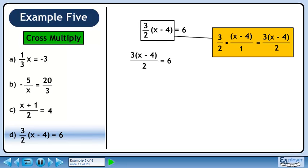We can write our next step as 3 times x minus 4 over 2 equals 6. Now write the 6 on the right side as 6 over 1.